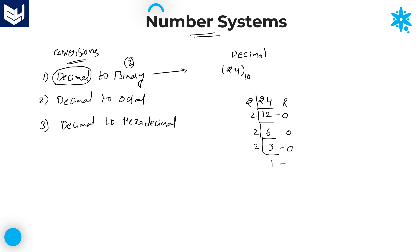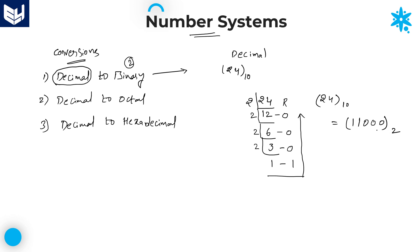3 divided by 2 is 1 remainder 1, and you are left over with 1. Once the division process is completed, write the remainders from bottom to top. So 24 base 10 equals 11000 base 2. You must represent the base value, because without it you cannot identify which number system the number belongs to.